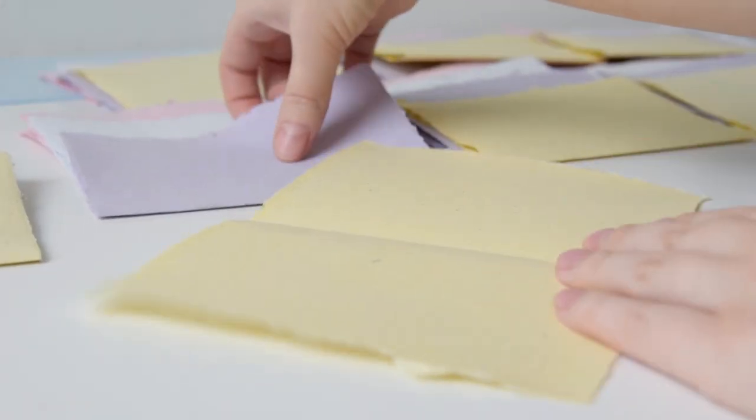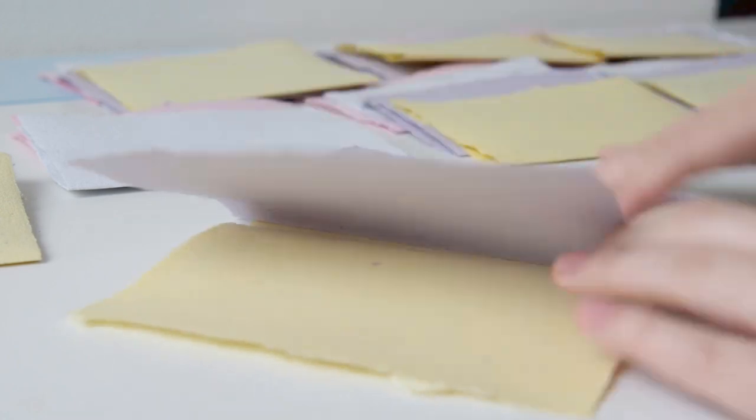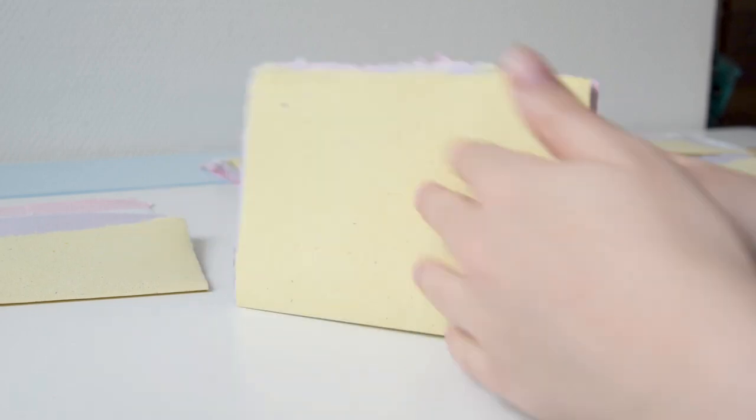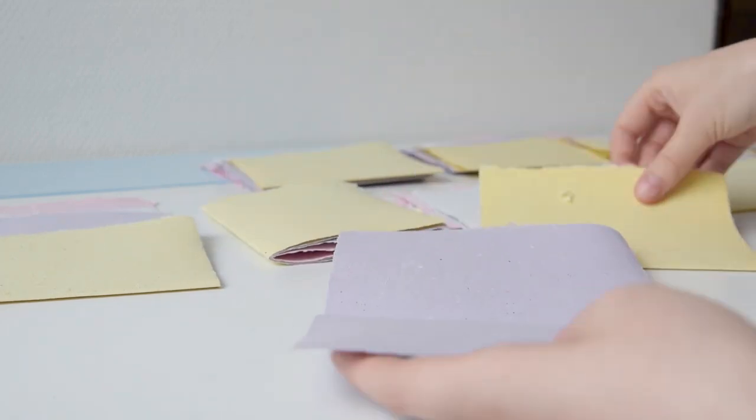Now I have each page folded, I can group them together. I fold them open and slide them into each other, then close them as a group. That's a signature! Do this with all the groups.